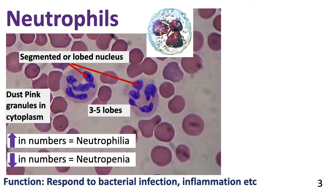When we have increased numbers of neutrophils circulating in the blood, the condition is called neutrophilia. This occurs in bacterial infections, inflammations, after surgery, or in certain cancers.